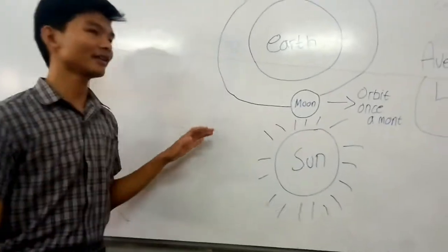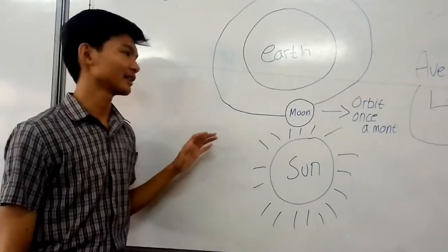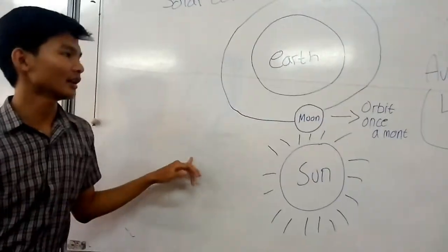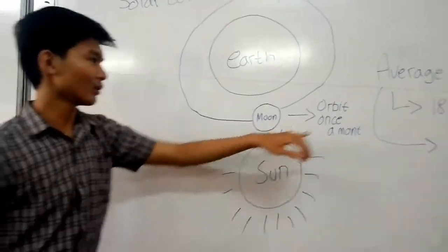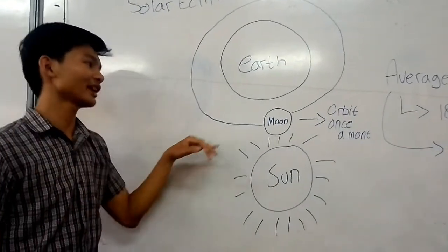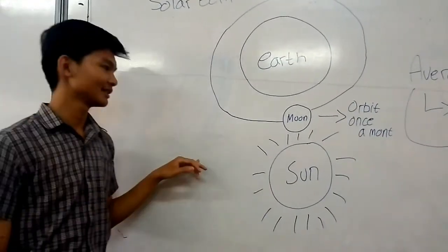So the solar eclipse is a popular phenomena that is very rare to find. So the earth has average of 100 years to have solar eclipse phenomena. Thank you.